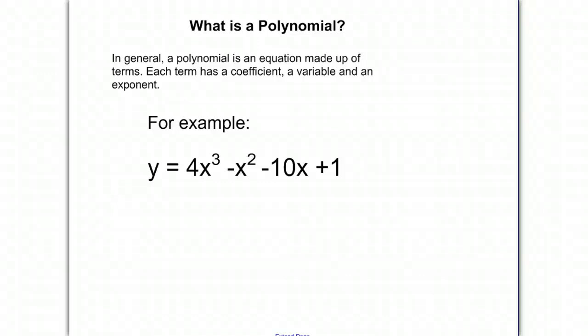Today we're going to be talking about what is a polynomial. In general, a polynomial is an equation made up of terms. Each term has a coefficient, a variable, and an exponent.